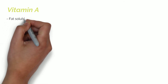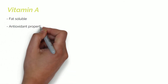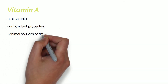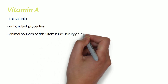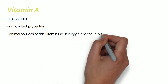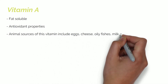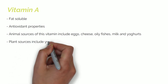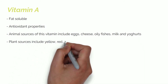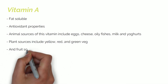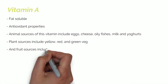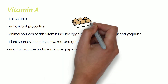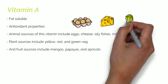Vitamin A is fat soluble and has strong antioxidant properties. Animal sources of this vitamin include eggs, cheese, oily fish, milk and yoghurts. Plant sources include yellow, red and green vegetables, and fruit sources include mangoes, papayas and apricots.